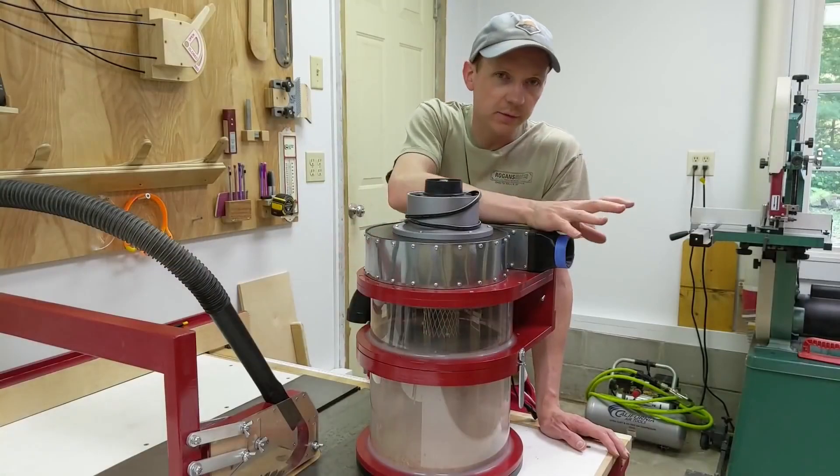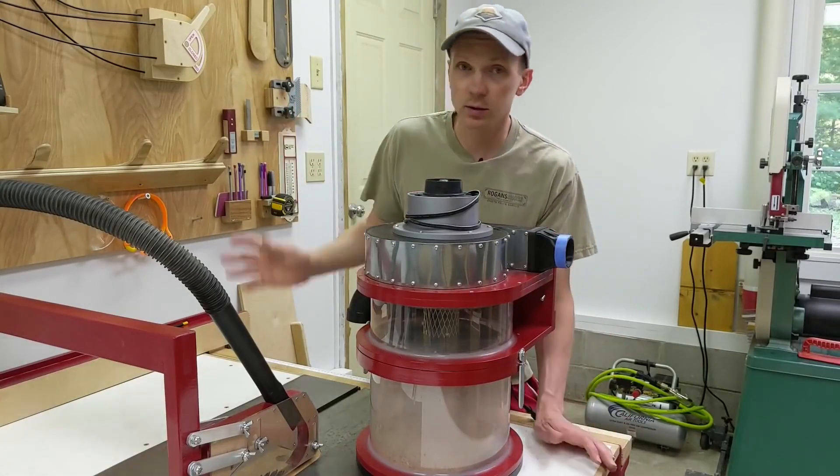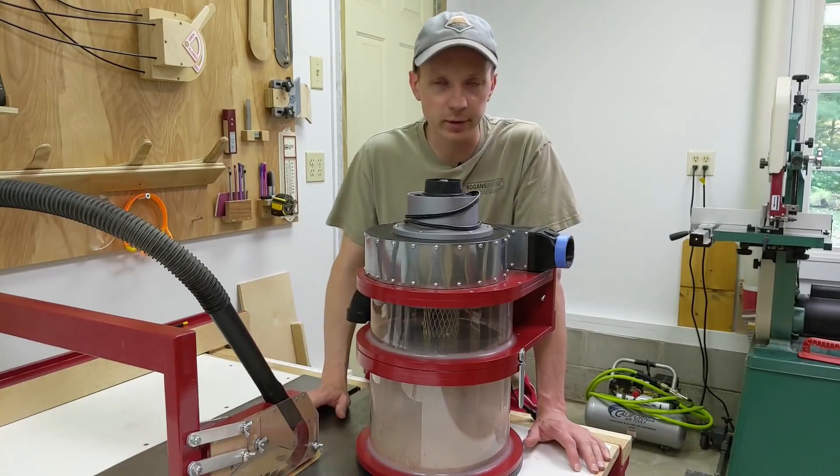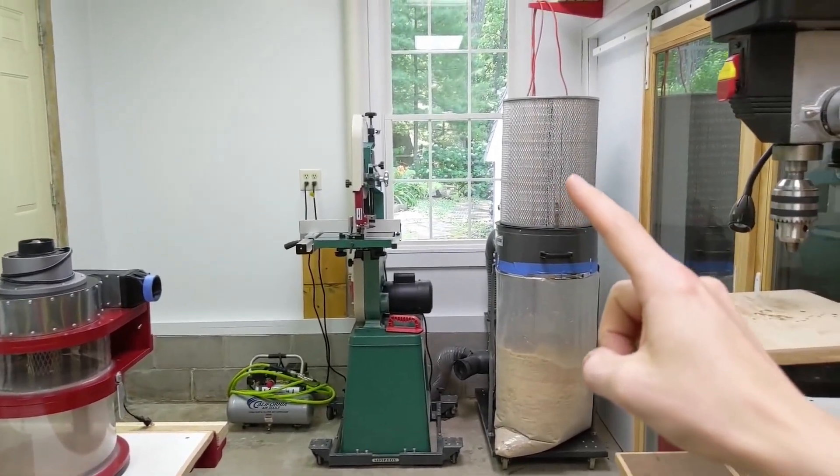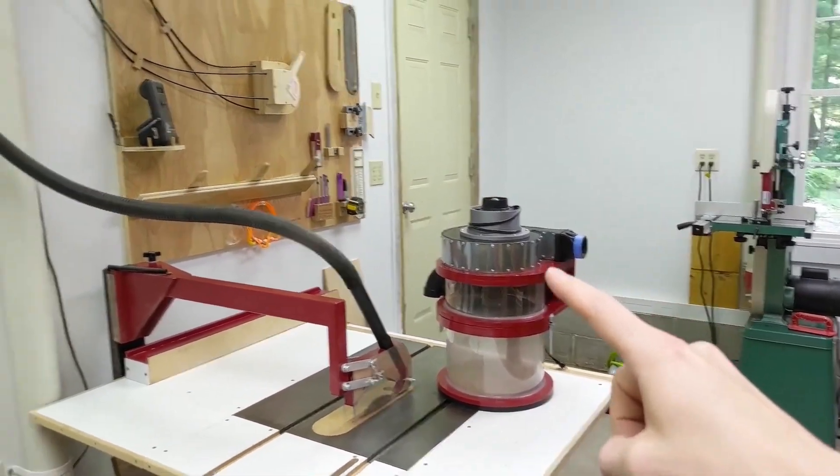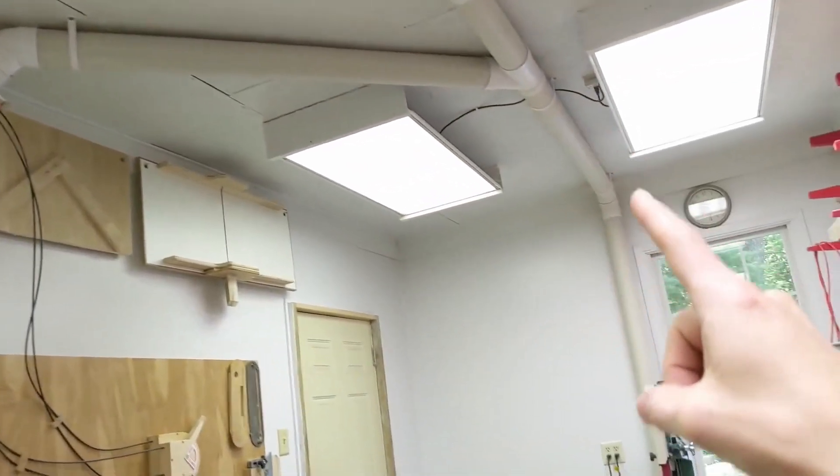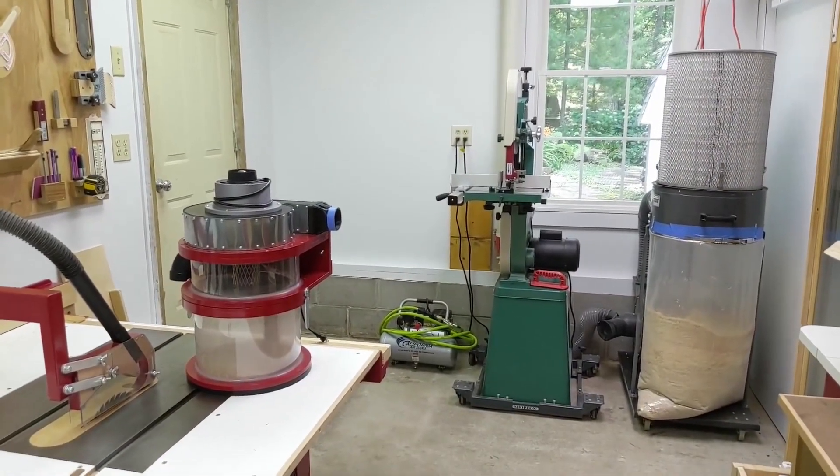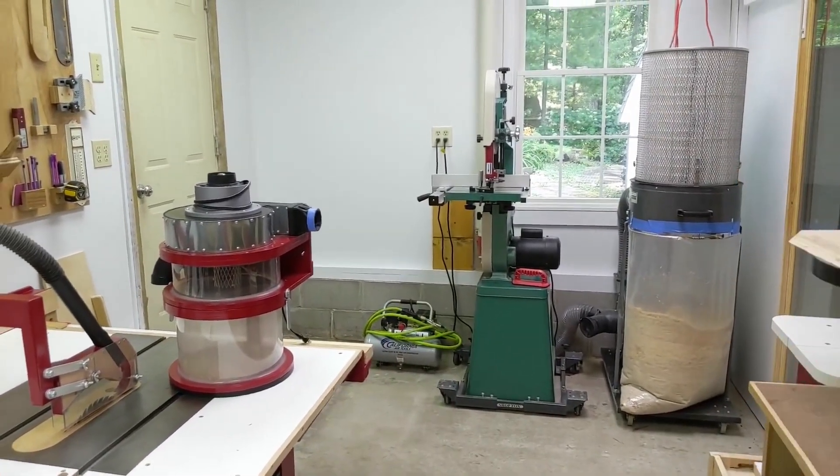Now I could have just added a filter box to the exhaust of this cyclone and then mounted it to the wall and I would have a pretty sweet dust collector for the overarm. But then I got to thinking: I've already got a pretty nice filter on my main dust collector. Could I just hook the exhaust from my mini cyclone right into the dust collection line of my main dust collector and have it suck out the fine dust? Then I wouldn't have to deal with a separate filter box for this unit and my main one could do all the work.